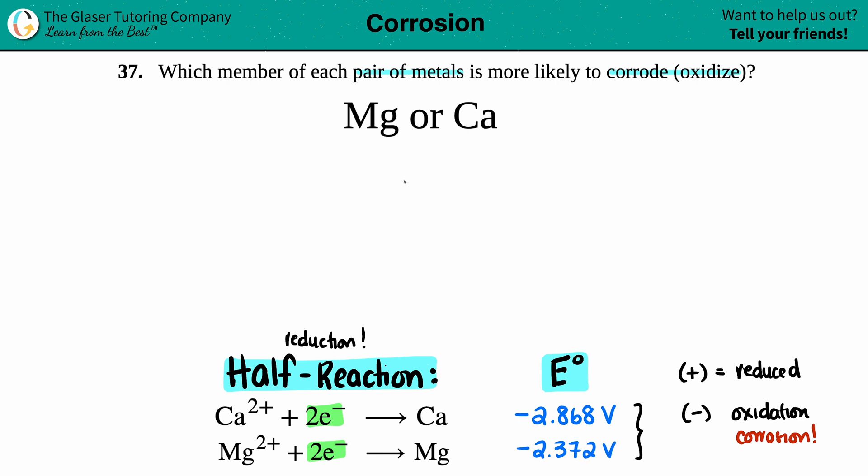So we know that if we did have a sample, calcium would corrode first. And that is the final answer.